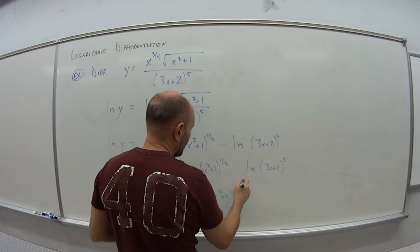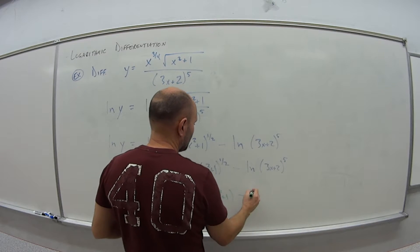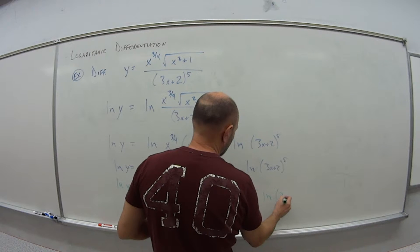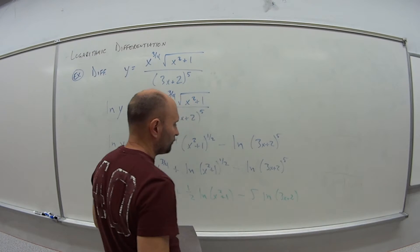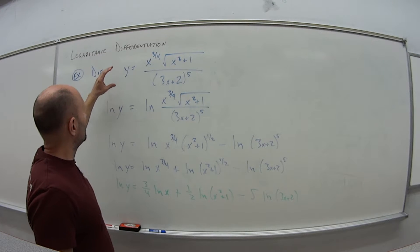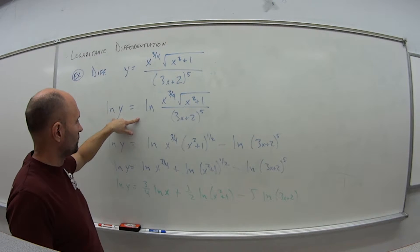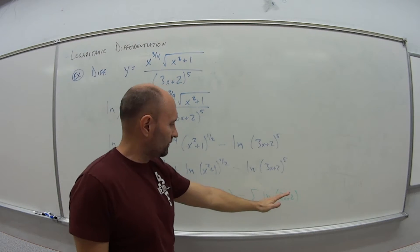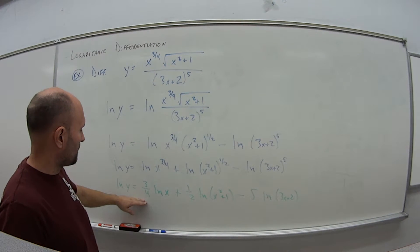minus, bring down the 5, so minus 5 natural log of 3x plus 2. So now I've rewritten this original one, taking natural log of both sides and then applying all my law of logs to get this expression here at the bottom.